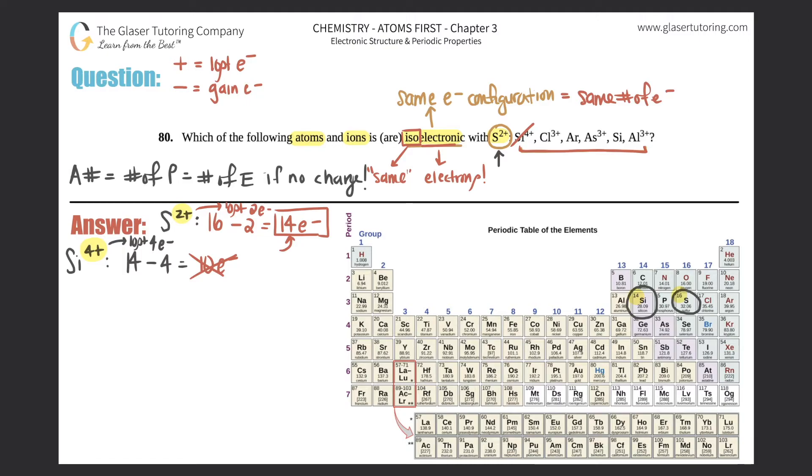Now let's go to Cl3+. Chlorine is over here, atomic number is 17, so we start with 17. Plus 3 means that we lost 3 electrons, so minus 3. 17 minus 3 is 14 electrons - that's how many electrons are left in the chlorine 3+ ion. Yeah, it does match because we still want to have 14 electrons. So this would check out. Chlorine 3+ would be an isoelectronic ion with S2+.